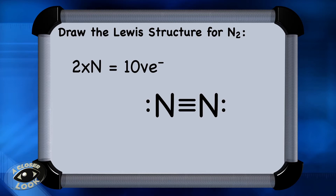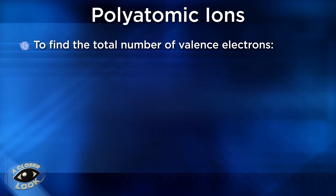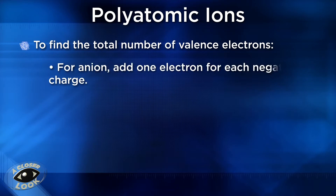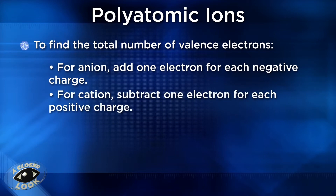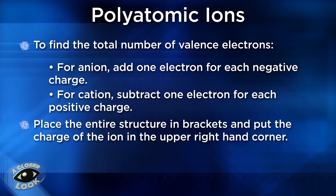When constructing a Lewis structure for a polyatomic ion, the rules are essentially the same except under two conditions. If it's a polyatomic anion — negatively charged — add one electron to the total for each negative charge. If it's a cation, like ammonium, subtract an electron for each positive charge. In each of these cases, when you finish the Lewis structure, place it in brackets and put the charge of the ion in the upper right-hand corner.